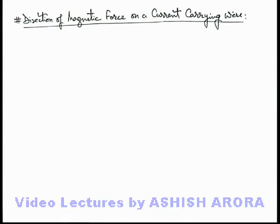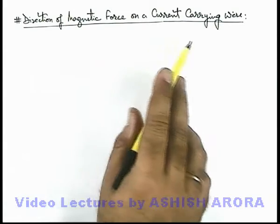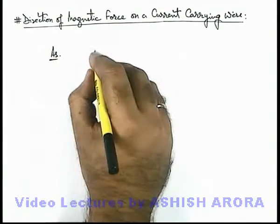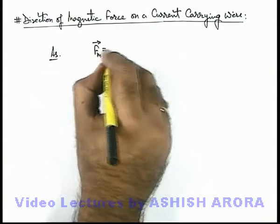Now we'll discuss the direction of magnetic force on a current carrying wire. As we already discussed, on a current carrying wire, magnetic force is given by